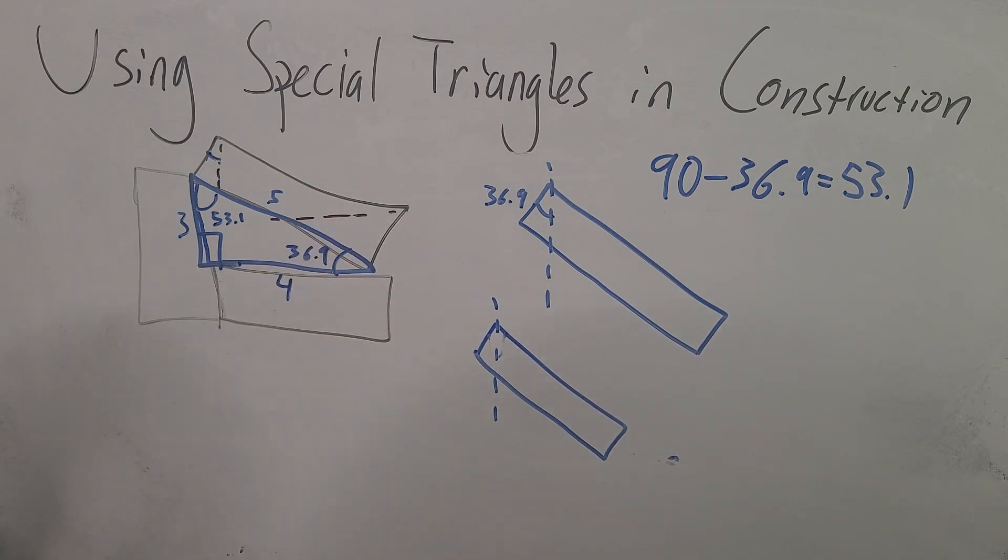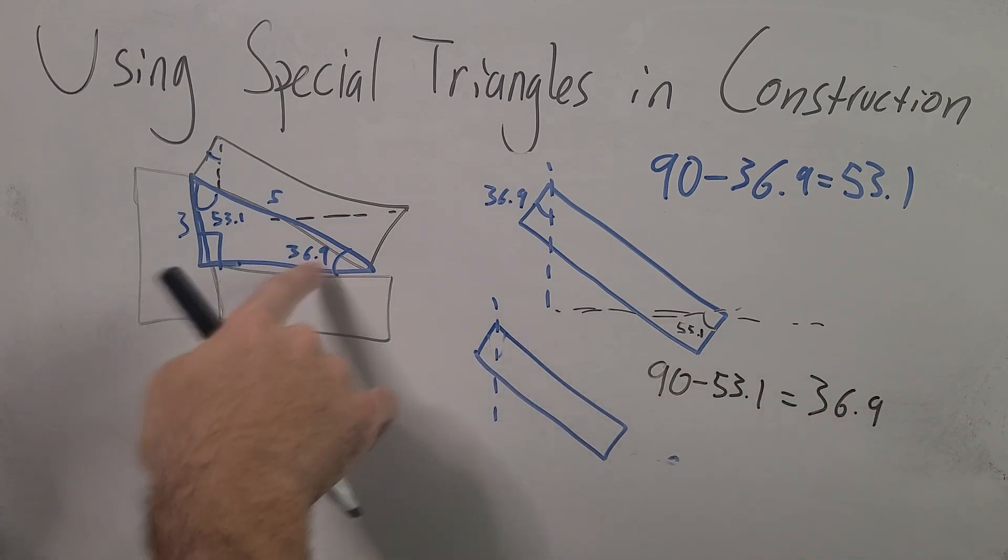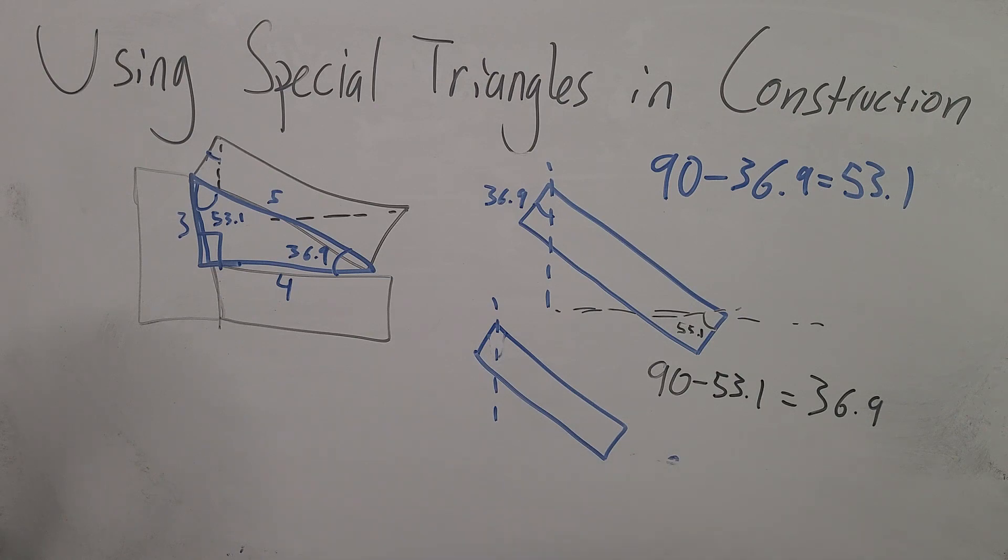Looking at the horizontal path, let me use my black marker for that section. For the horizontal path right here, this cut, you want to use fifty three point one. You need to cut this off by an angle of fifty three point one. Again, ninety minus fifty three point one is what's going to get you the thirty six point nine that you need to have in your perfect three, four, five triangle.